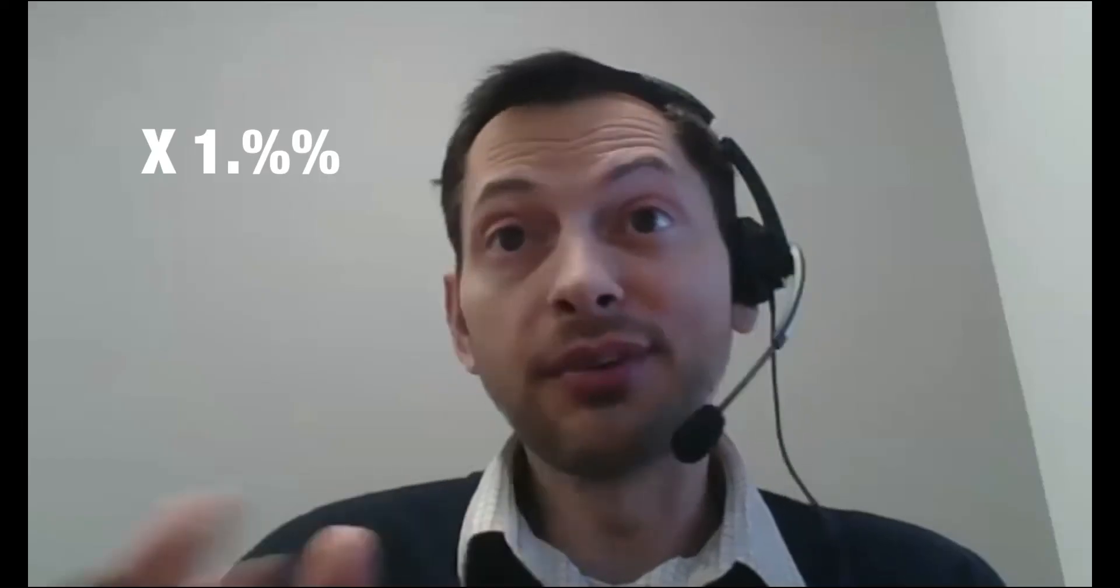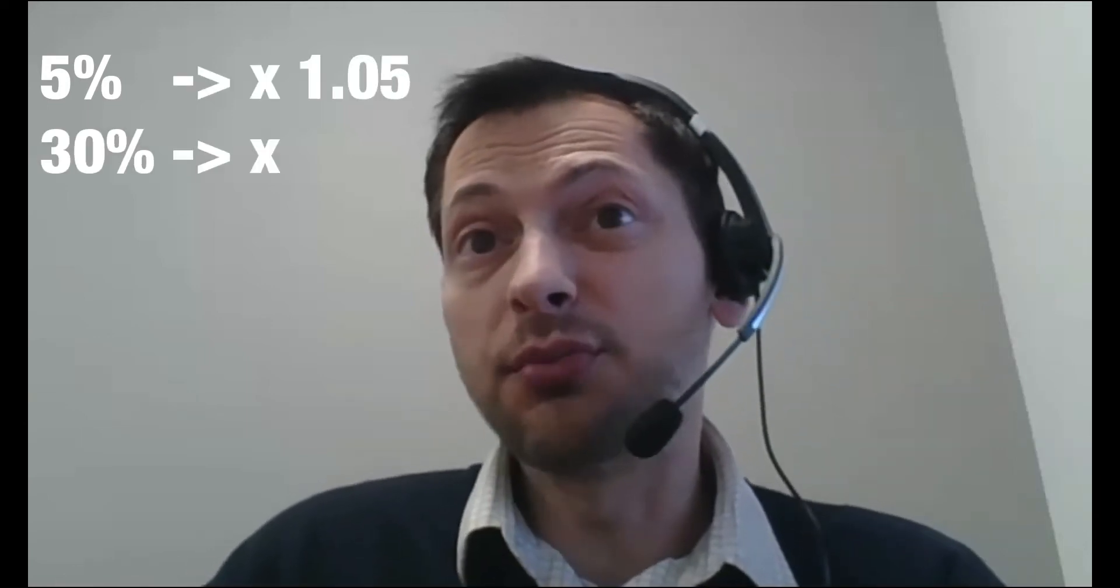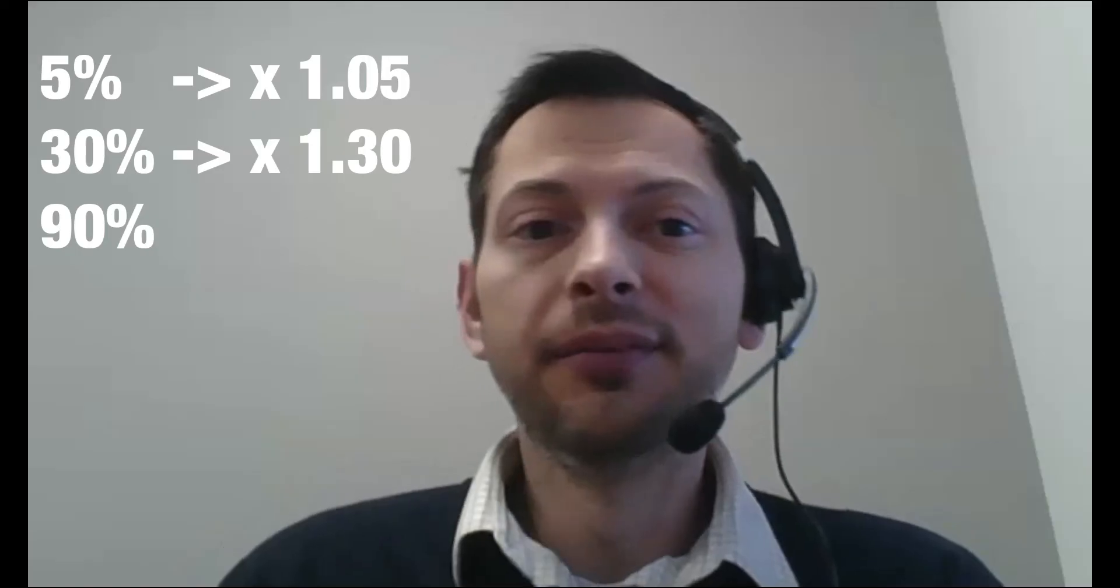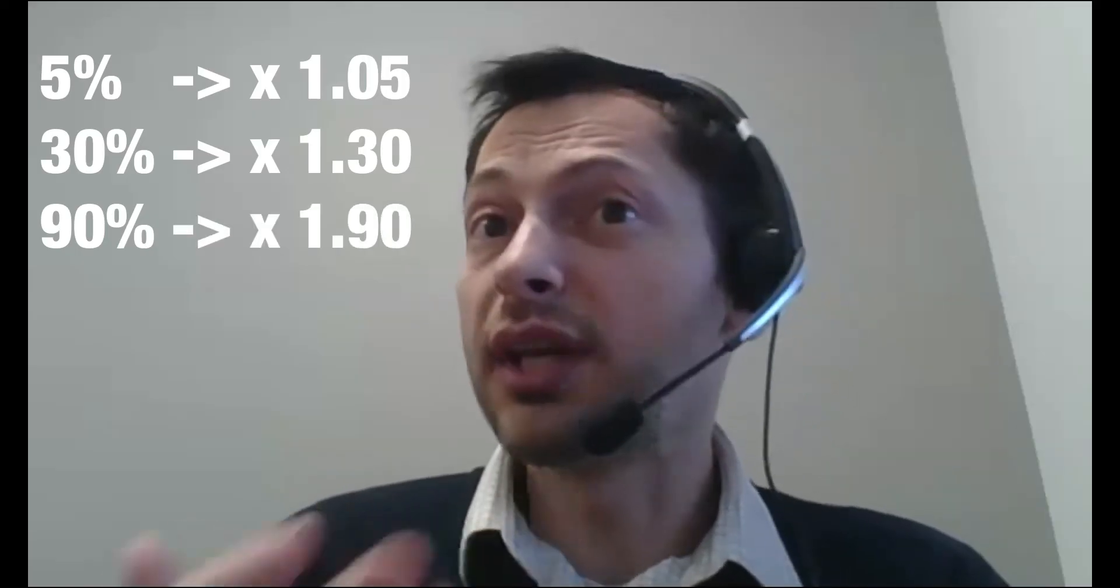For percent increase, if I want to increase by a certain percent, I would multiply by one point whatever the percent is. For example, to increase a number by 5%, I would multiply by 1.05. To increase by 30%, I would multiply by 1.30. To increase by 90%, I would multiply by 1.90.